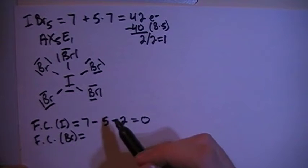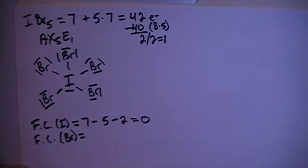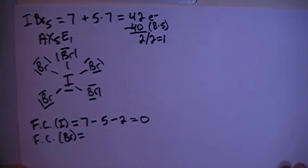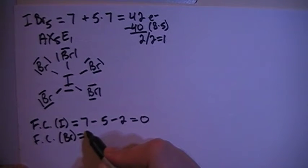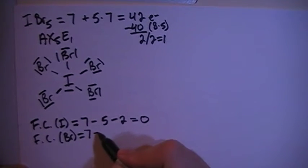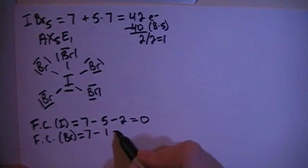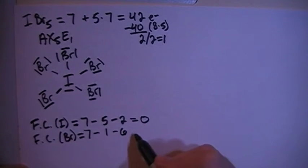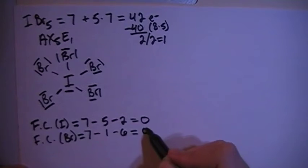And if you notice, they all have the same setup. They all have 1 single bond and 6 non-bonding electrons, so all of their formal charges will be the same. So their formal charge will be the 7 valence brought in, minus 1 single bond, minus 6 non-bonding electrons for a formal charge of 0.